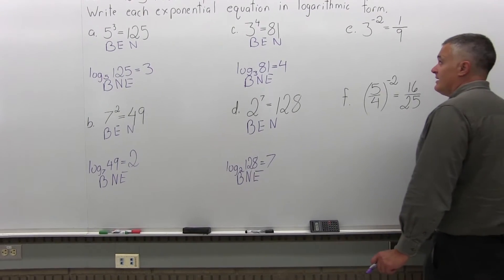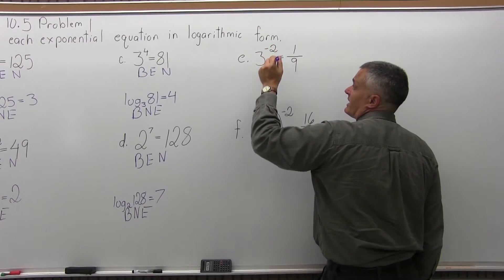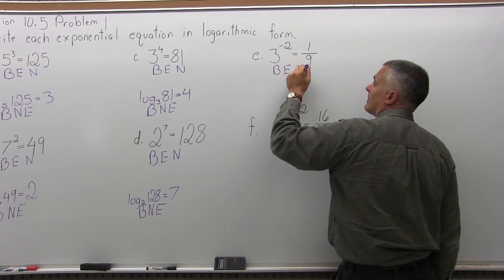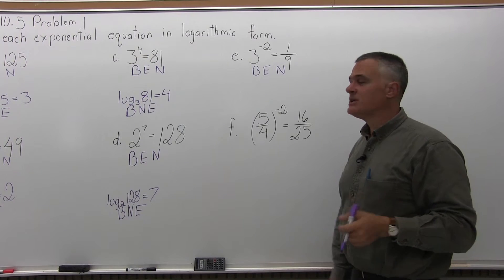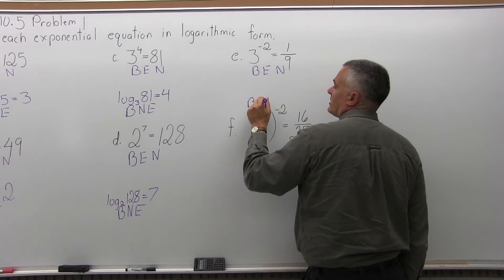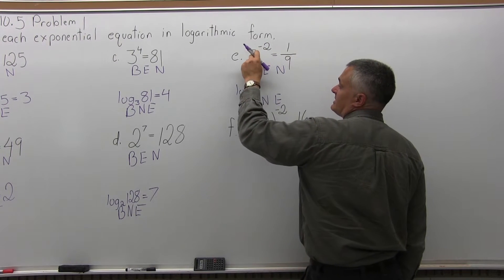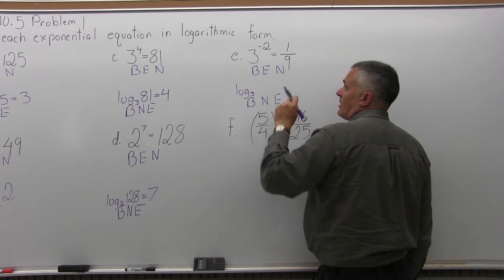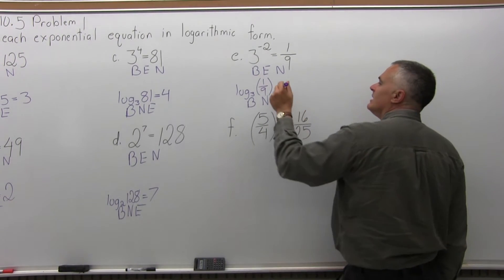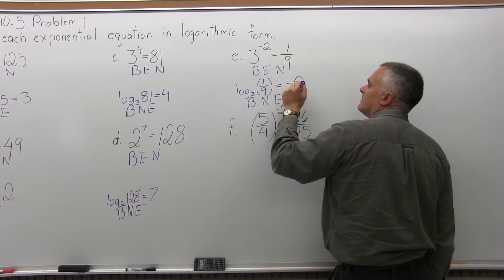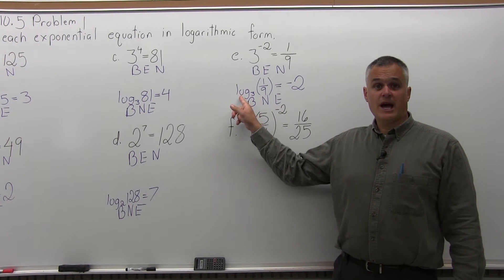Part E says write 3 to the negative 2 power equals 1 ninth in its log form. Under 3 to the negative 2 equals 1 ninth, I write BEN — the base is 3, the exponent is negative 2, and the number is 1 ninth. We have negatives and a fraction, but it's not any different. To convert to log form, I write BNE: log base 3, then the number 1 ninth in parentheses, equals, then the exponent negative 2. So 3 to the negative 2 power equals 1 ninth is equivalent to log base 3 of 1 ninth equals negative 2.